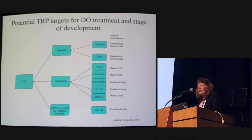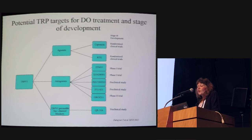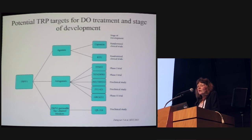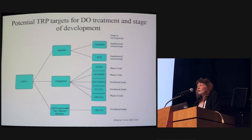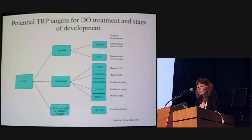There are a number of potential targets for detrusor overactivity and other treatments at various stages of development. There is more history with TRPV1, where agonists such as capsaicin and RTX are at various stages of randomized clinical trials. There are also a large number of antagonists, though many have had thermosensation-related side effects and have been dropped; however, a number still show considerable promise.